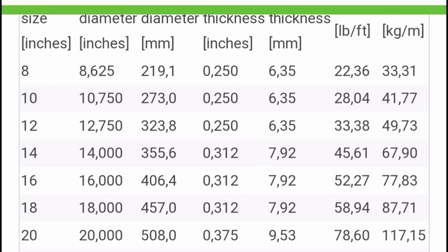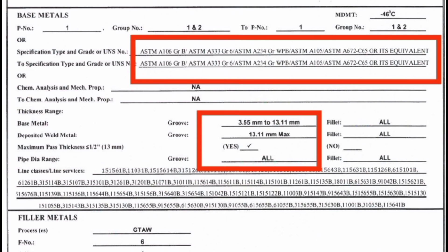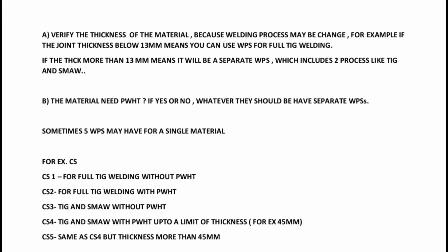So the thickness is 8 mm. In the WPS, we select the appropriate WPS — 8 mm is within the range, so full TIG applies. CS1 is correct for this joint. CS2 would be full TIG with PWHT. In the WPS, different details apply. Per ASME B31-3, CS3 is TIG plus SMAW.